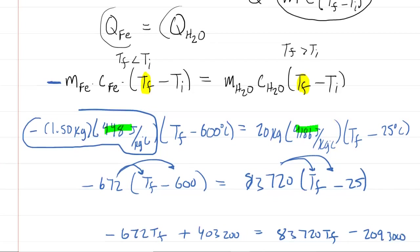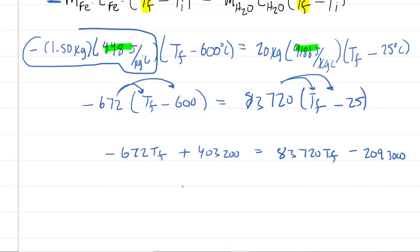And the rest is pretty easy algebra here. Why don't we add the 672,000 to both sides? And simultaneously, we'll add the 209,300 to both sides. So the left-hand side will become a rather large number. It's going to be 2,496,200.